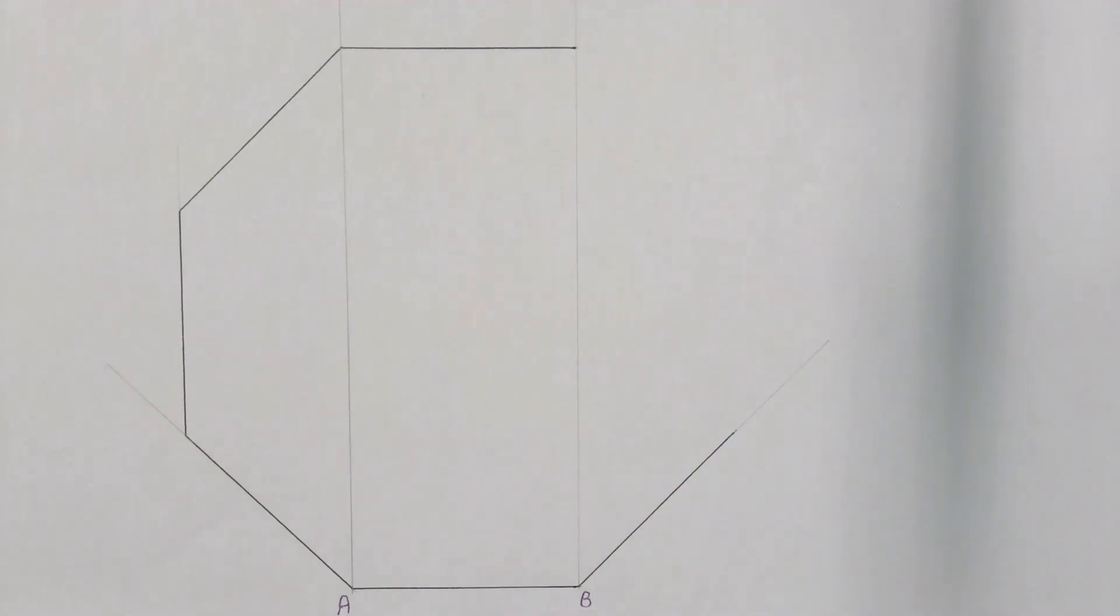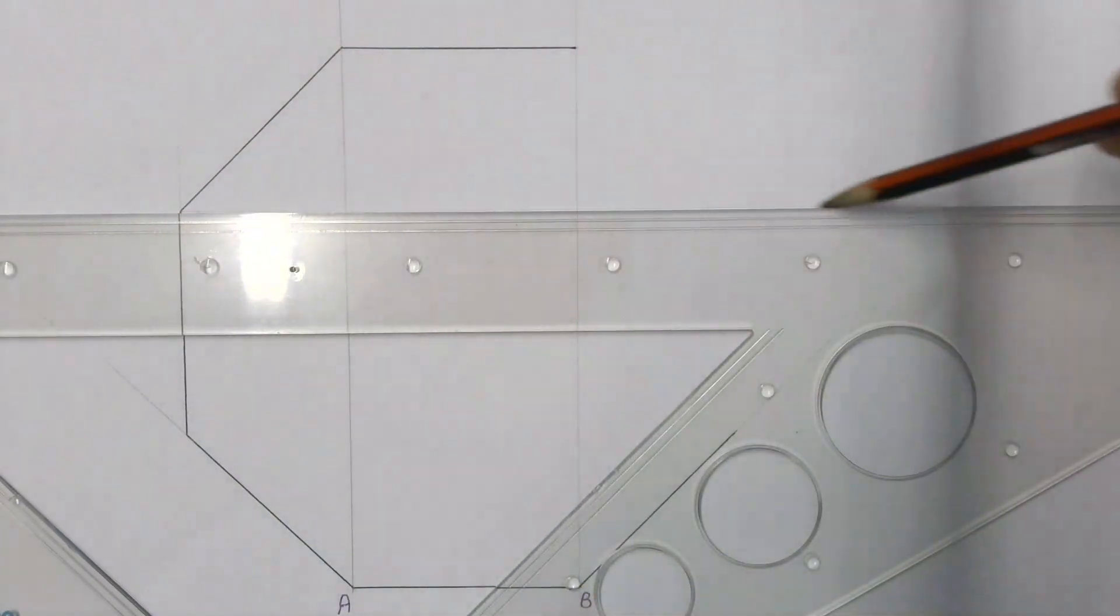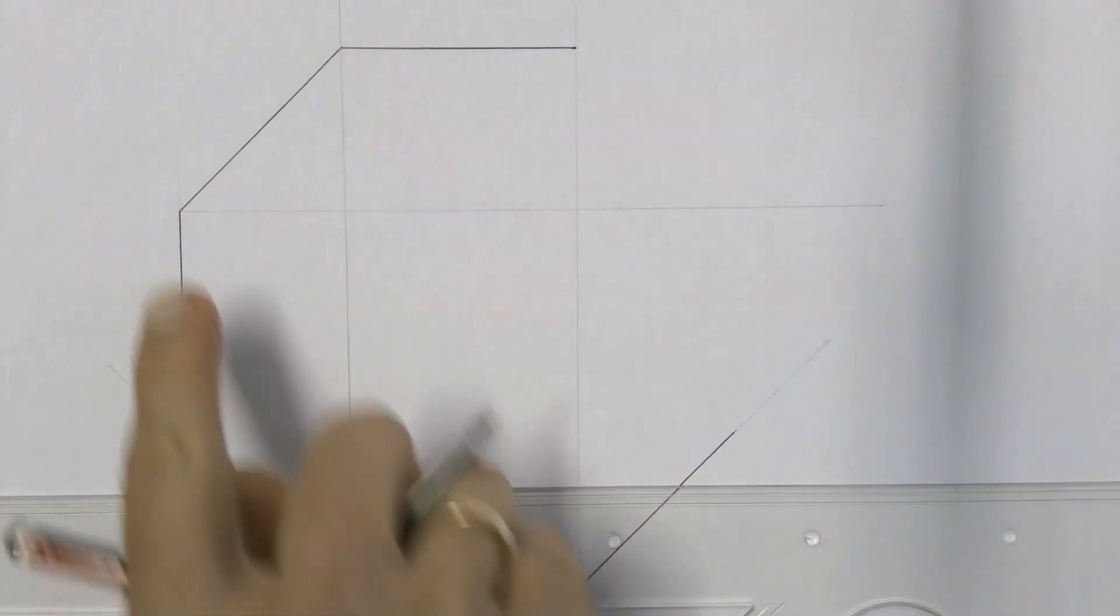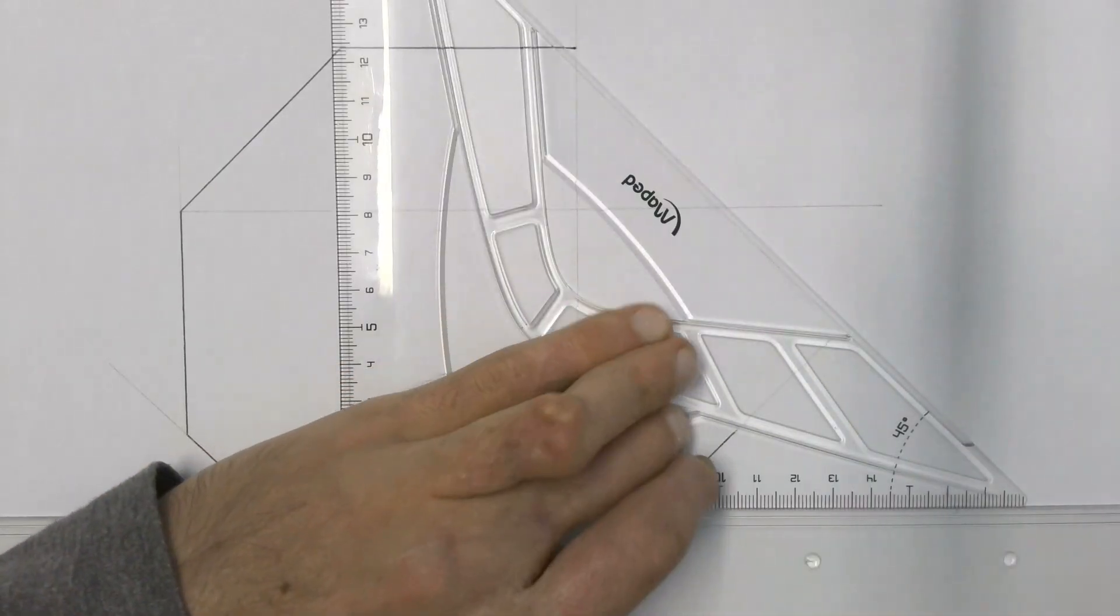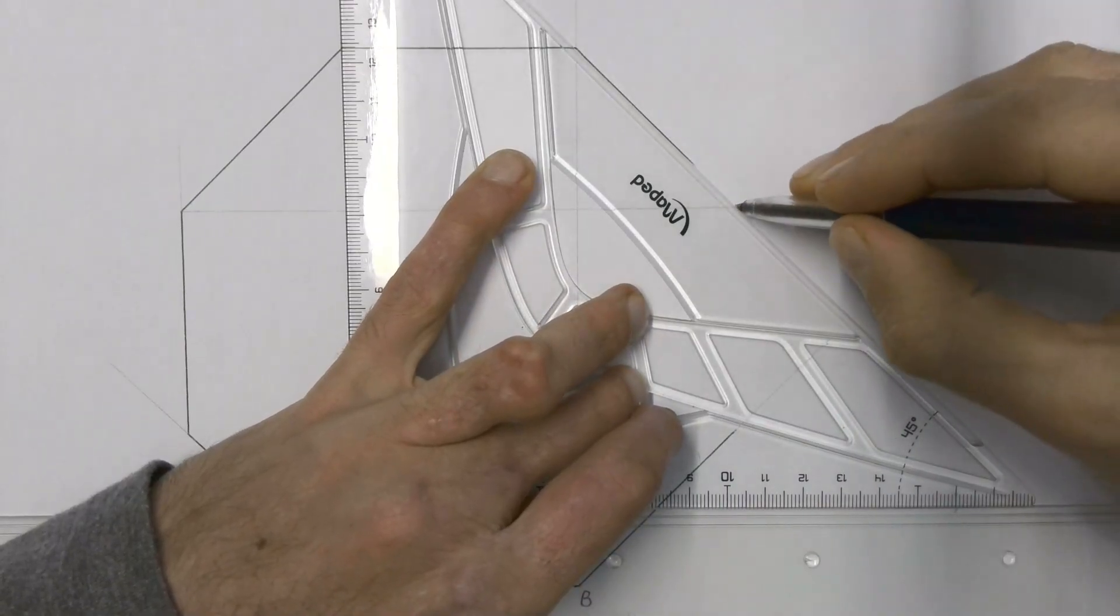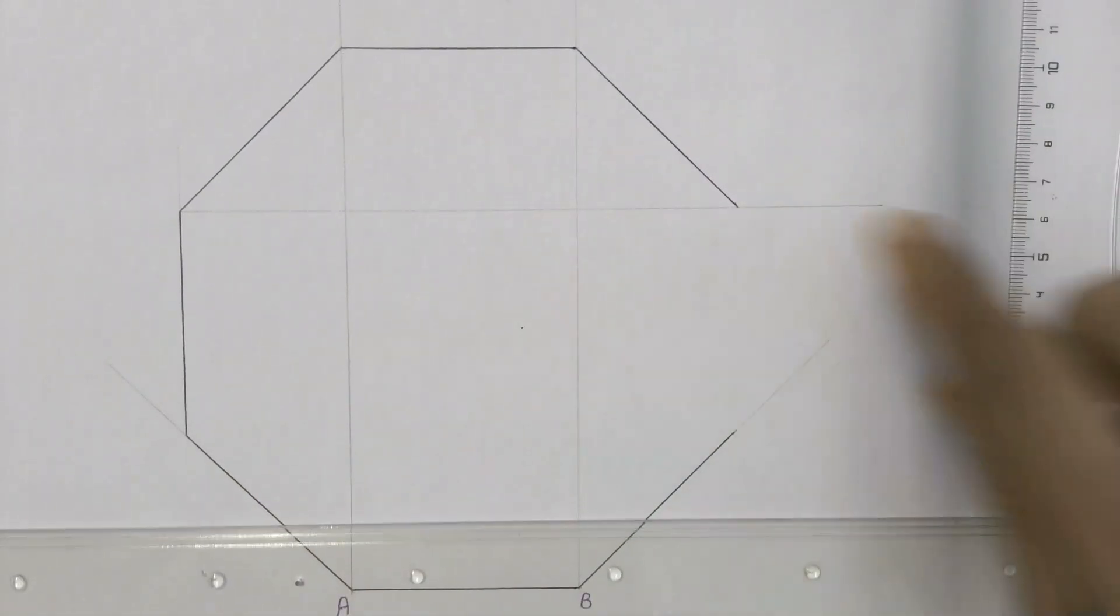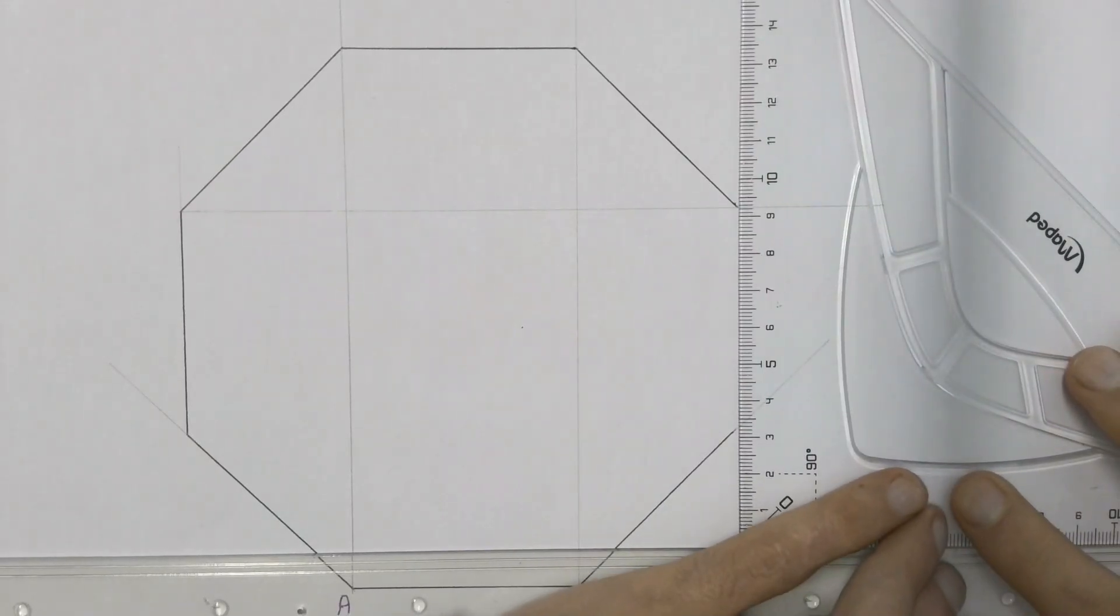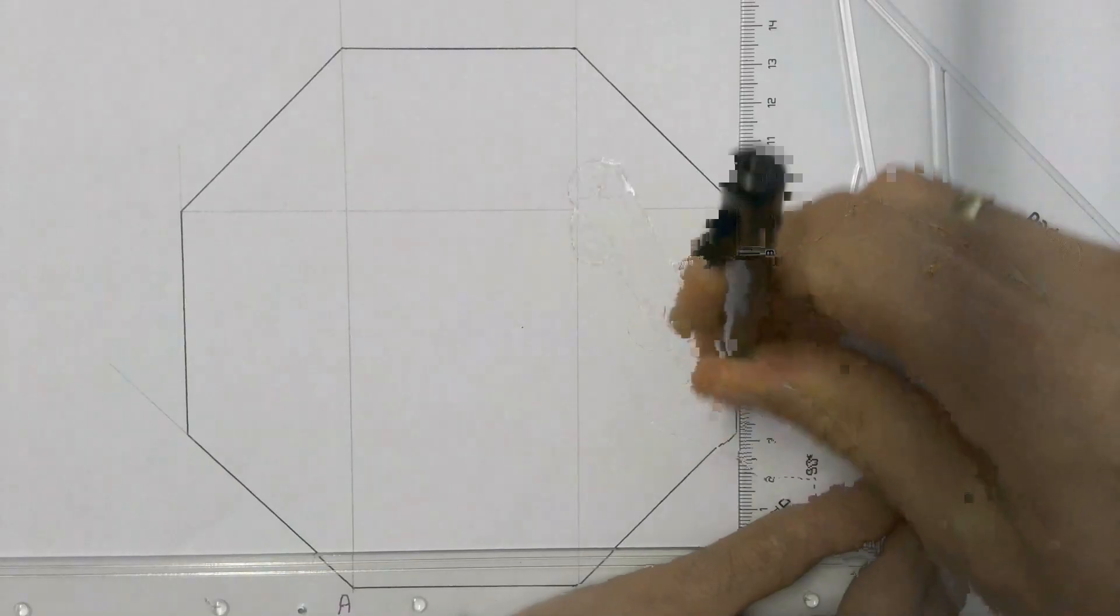Then take another construction line across from that point, straight across. Again, we won't have to measure anything. All we have to do is take the 45-degree set square and draw a line straight down until it hits the construction line that we drew across. If we have been accurate, we should be able to join those two lines together to form our octagon.